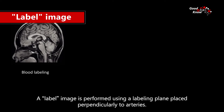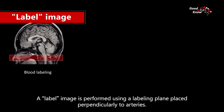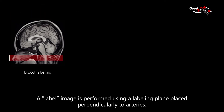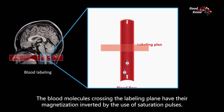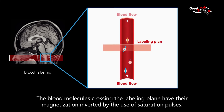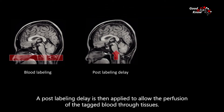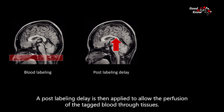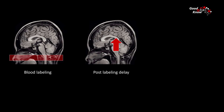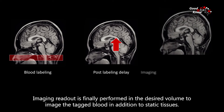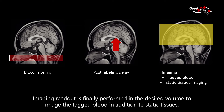A labeled image is performed using a labeling plane placed perpendicularly to arteries. The blood molecules crossing the labeling plane have their magnetization inverted by the use of saturation pulses. A post-labeling delay is then applied to allow the perfusion of the tagged blood through tissues. Imaging readout is finally performed in the desired volume to image the tagged blood in addition to static tissues.